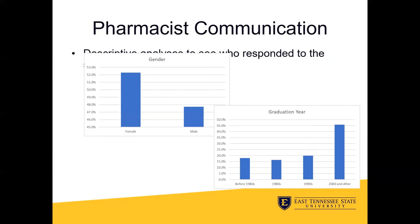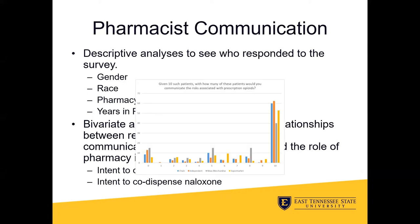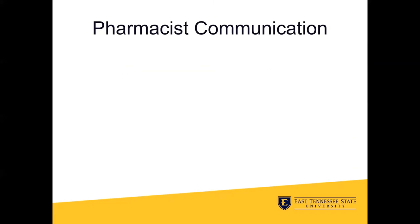You can see we had more females than males and most respondents received their PharmD in the last 20 years. We then wanted to see if any of these characteristics were related to the pharmacist communication intentions, as well as their intent to co-dispense naloxone, which is an opioid overdose reversal drug. This bar graph is more complex, but if we look at the right side, we can see that most folks working at any of the pharmacy locations — which included chains, independent pharmacies, mass merchandise pharmacies, and supermarkets — say they always communicate to their patients about risks associated with prescription opioids. Those working in mass merchandise locations were a little lower on that end of the graph. We also ran some quick bivariate statistical tests to look for preliminary significance in these effects.